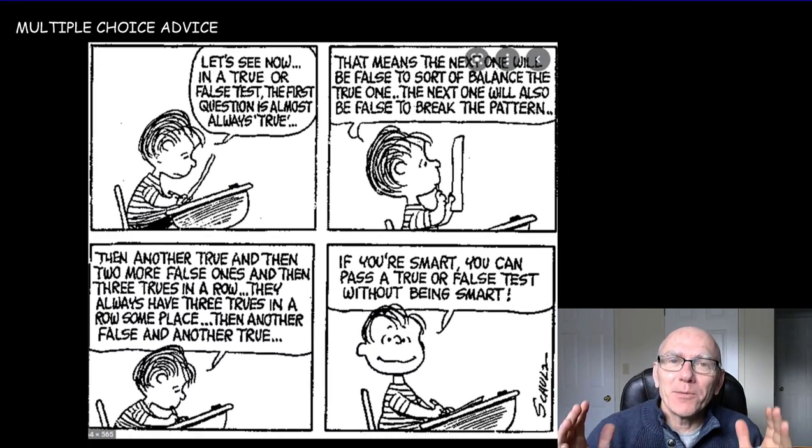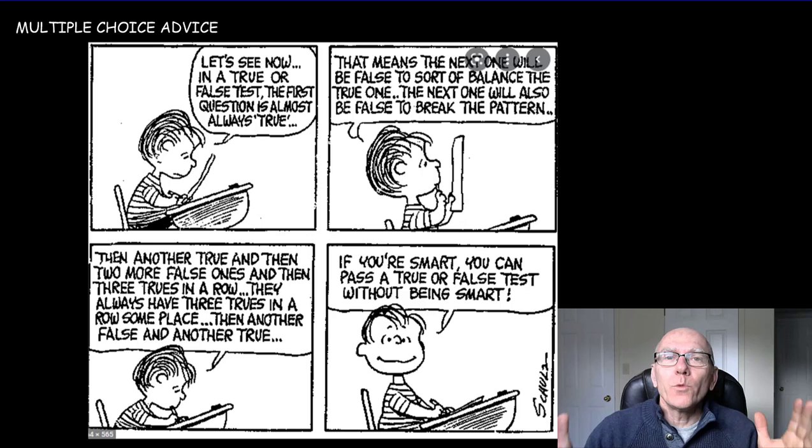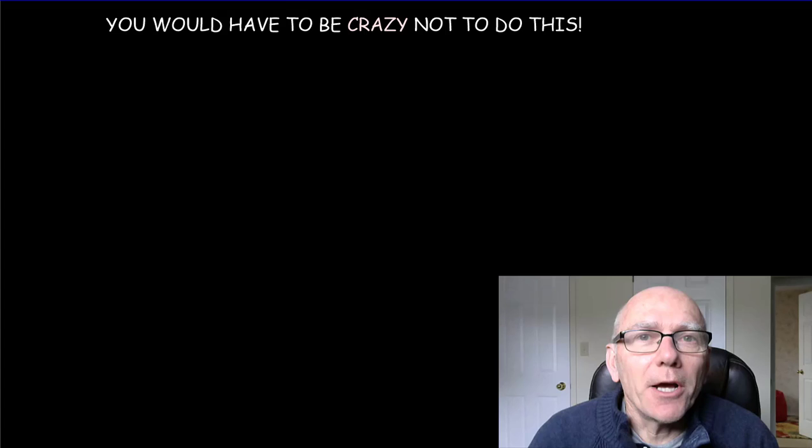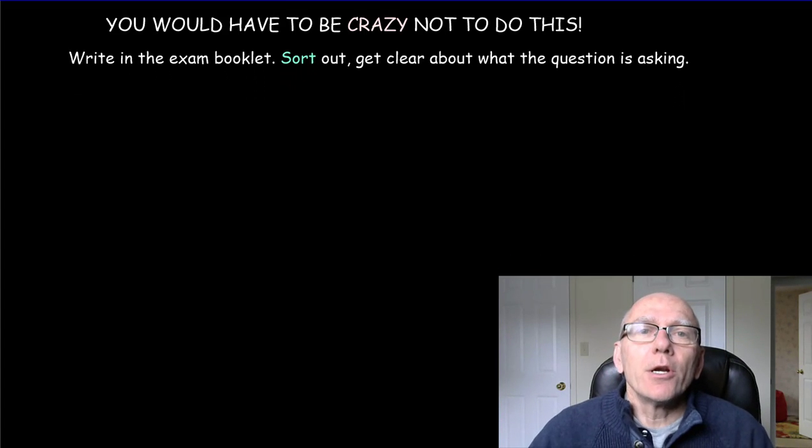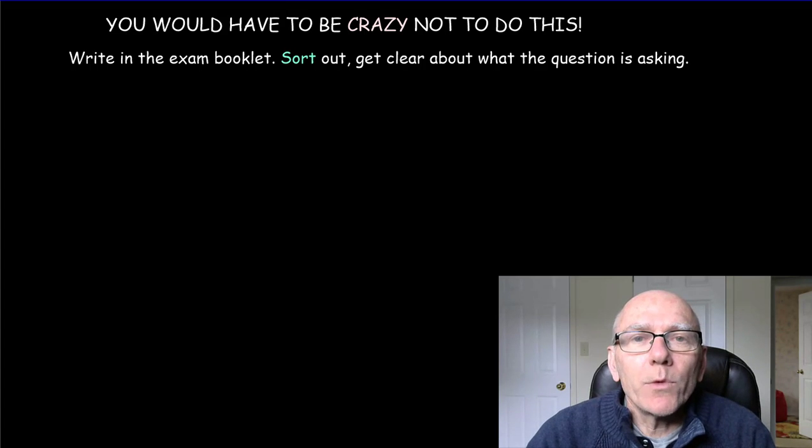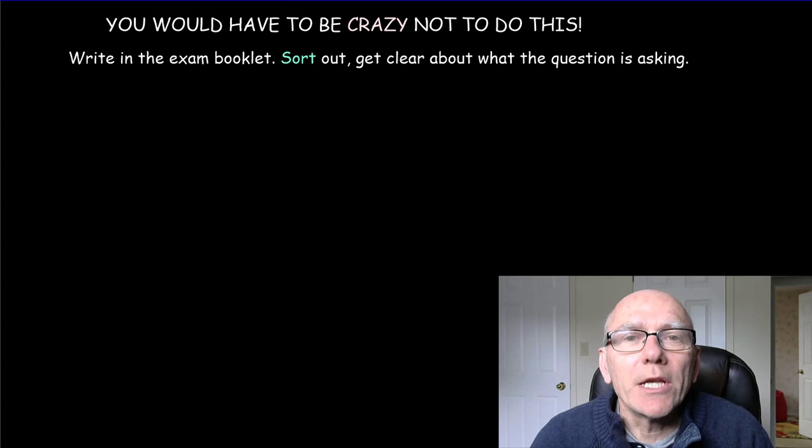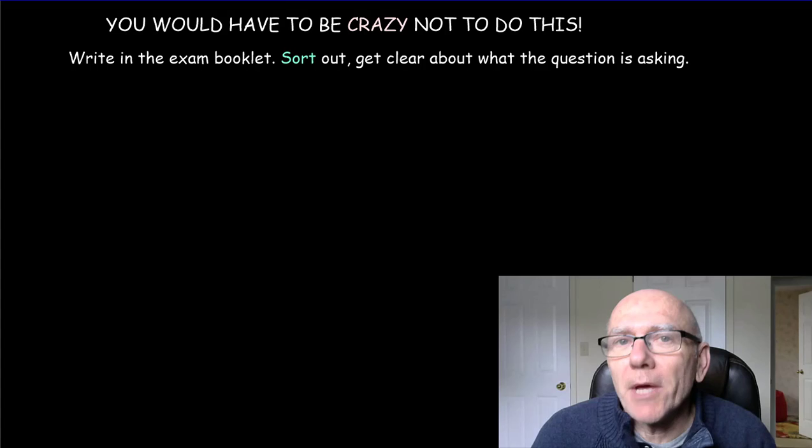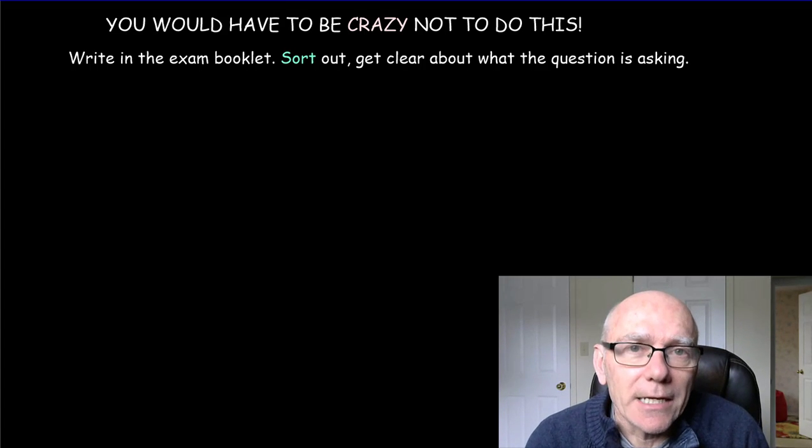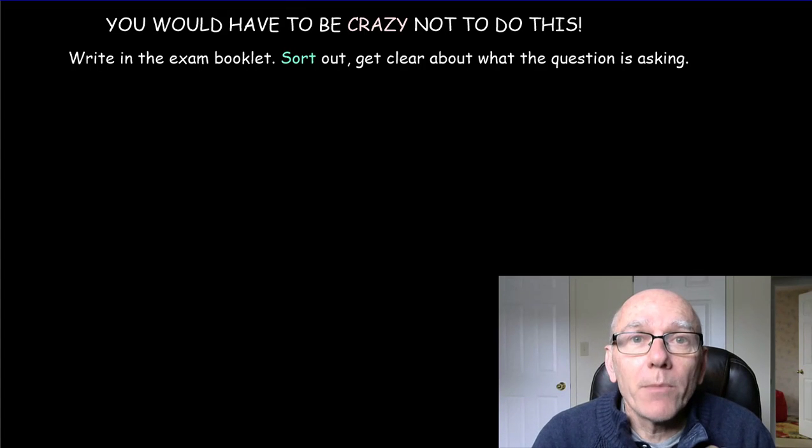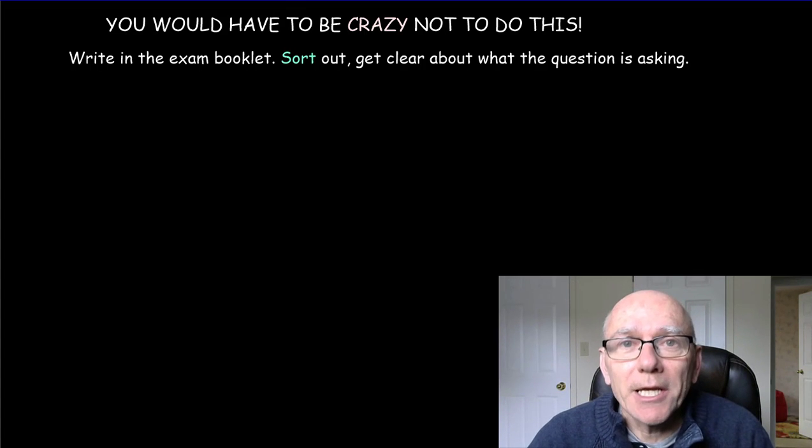Let's get into the really practical stuff now. What should we do on paper one, the multiple choice exam? I think these are things that you'd have to be crazy not to do. Nevertheless, most students don't do them. My first bit of advice would be to write in the exam booklet. In particular, make a diagram for the problem. Annotate that diagram with your variables, with the information that you're given. You need to sort out that information and get very clear about what the question is asking. A funny thing happens when you're clear about what's being asked - you're usually able to solve the problem.